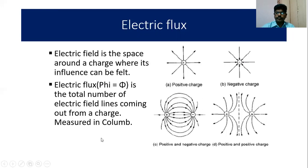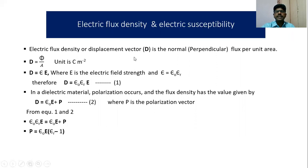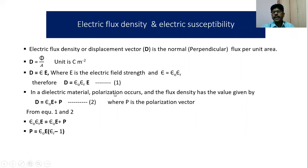Electric flux density, also called the displacement vector, is the normal flux per unit area: D = flux / area, measured in coulombs per meter squared. We also have the formula D = ε E, where E is the electric field strength and ε = ε₀ × ε_r. Substituting, we get D = ε₀ × ε_r × E — we take this as expression (1).